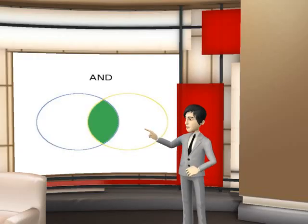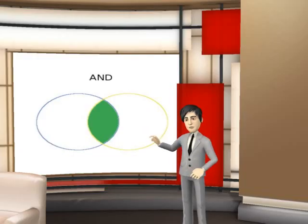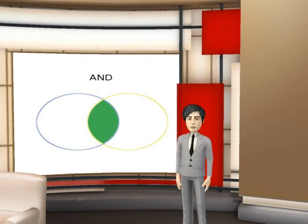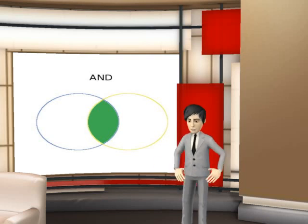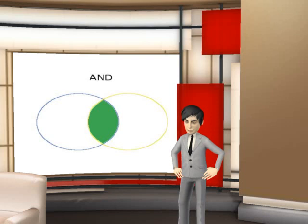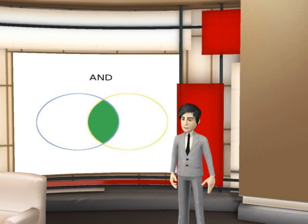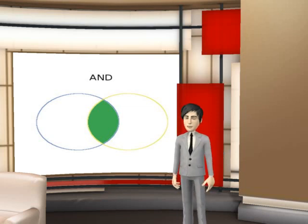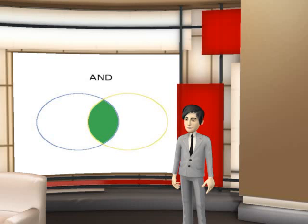AND is used to join words or phrases together. It requires that all terms be in the search results. If you look at the board, you will see the green area is showing where results overlap and would include all your search terms. It really narrows your search results.